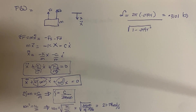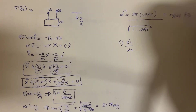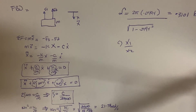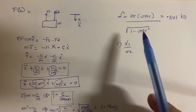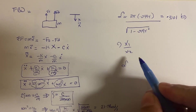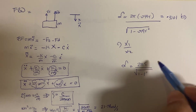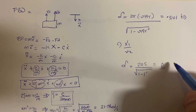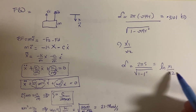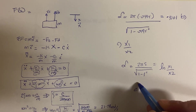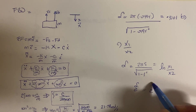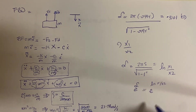Part C asks us for the ratio of amplitude 1 over amplitude 2. We know that the ratio can be determined using the logarithmic decrement, since δ equals the natural logarithm of x1 over x2. If we take the exponential of both sides — exponential of the logarithmic decrement equals exponential of ln(x1/x2) — we get: e^δ equals x1 over x2.